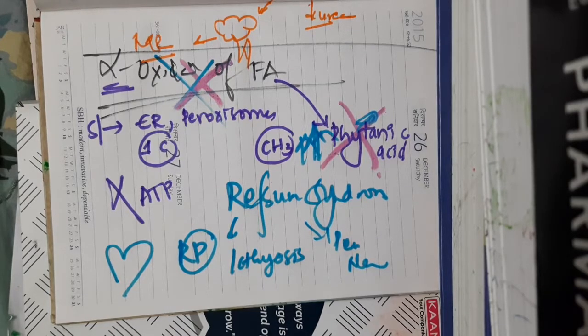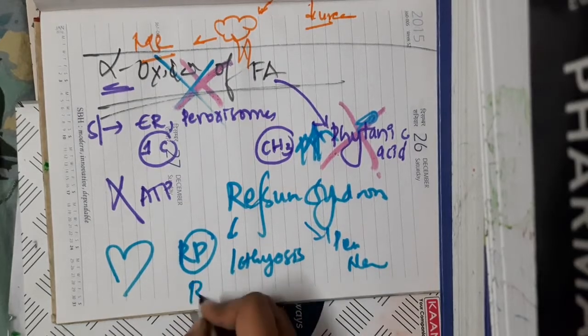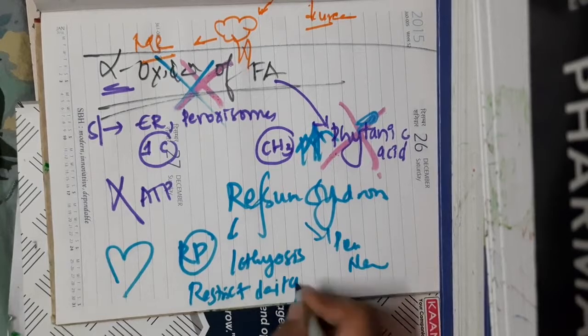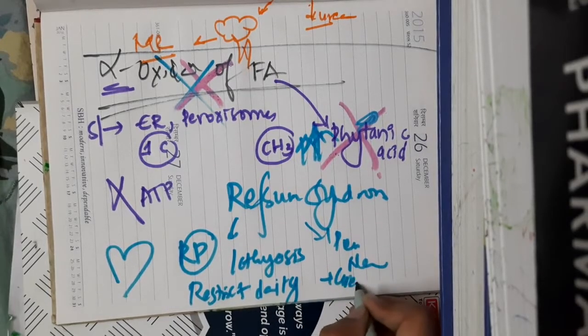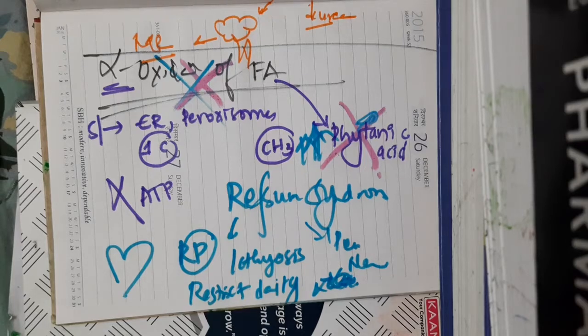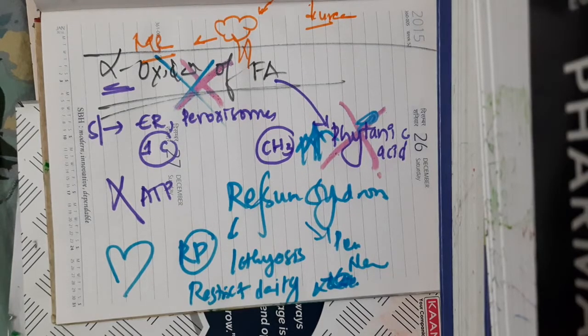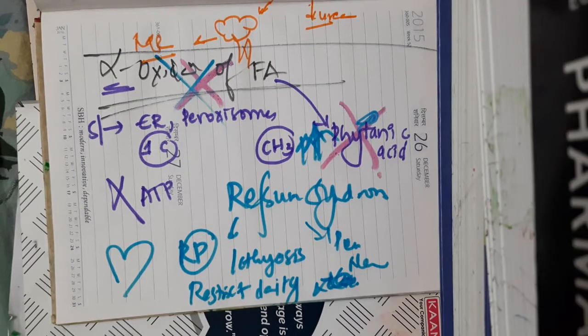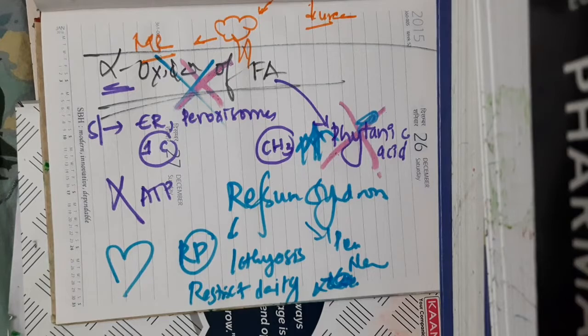Because this phytanic acid is present in dairy products, you should restrict the dairy products in refsum disease and you should ask the patient to restrict dairy products and also green leafy vegetables. Because green leafy vegetables also contain this phytanic acid, we should restrict intake of green leafy vegetables also.